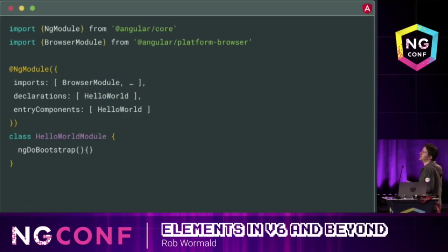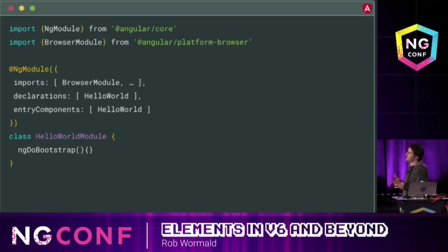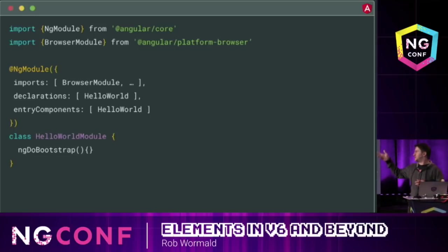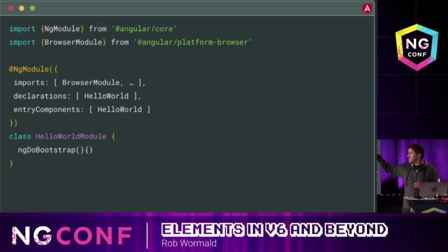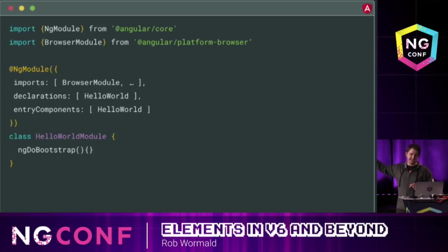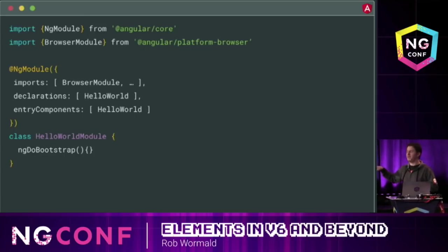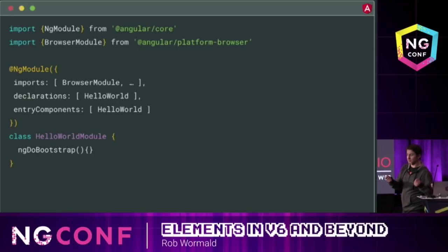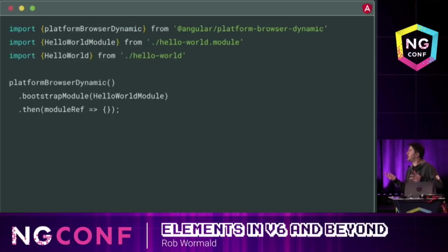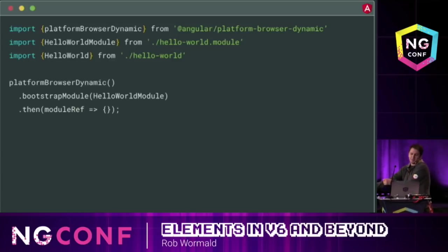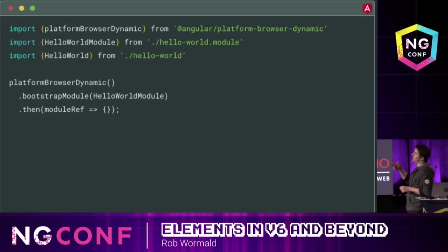We do that just like you do today in Angular — nothing new here. We have an NgModule, we bring in imports, we use the browser module, we declare that this element belongs to this module, and we add it to the entryComponents array. One thing to notice is I'm not saying bootstrap this component — I'm not adding it to the bootstrap array. Instead, I'm passing in this ngDoBootstrap callback and not doing anything with it. This basically tells Angular to start up the module but not render the component — just start up this context.